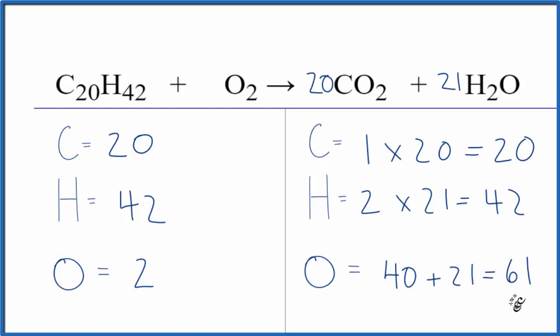This is where it gets a little challenging. You have this odd number, so you can't just put a whole number and get the oxygens balanced. But because the oxygen is by itself, whatever we do to it won't affect the carbons and hydrogens.